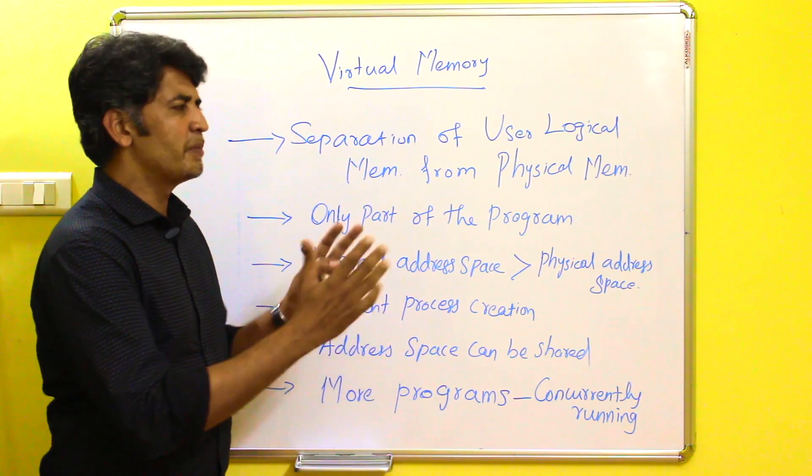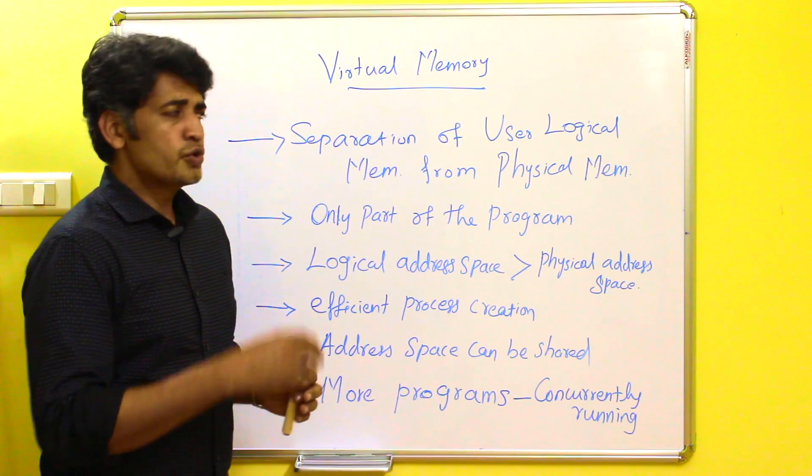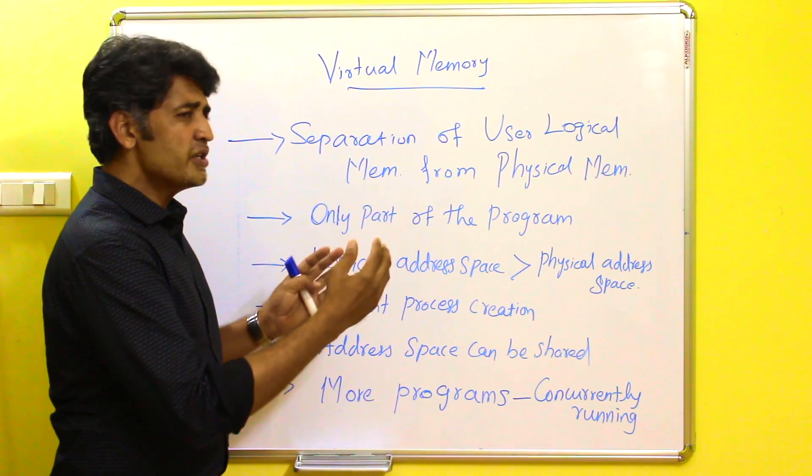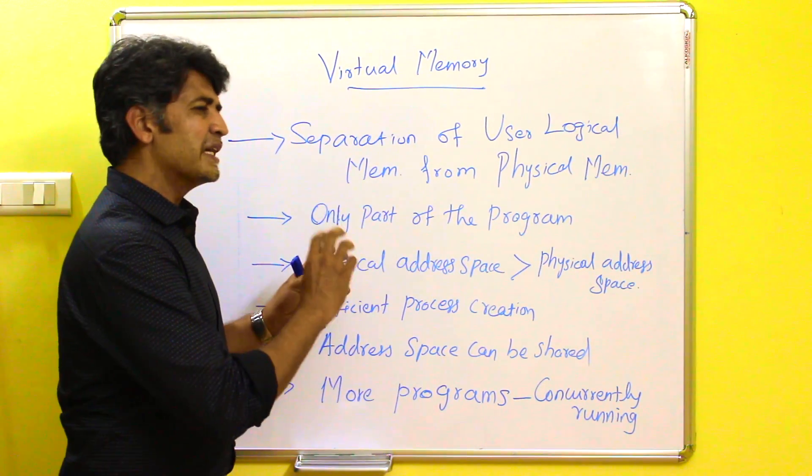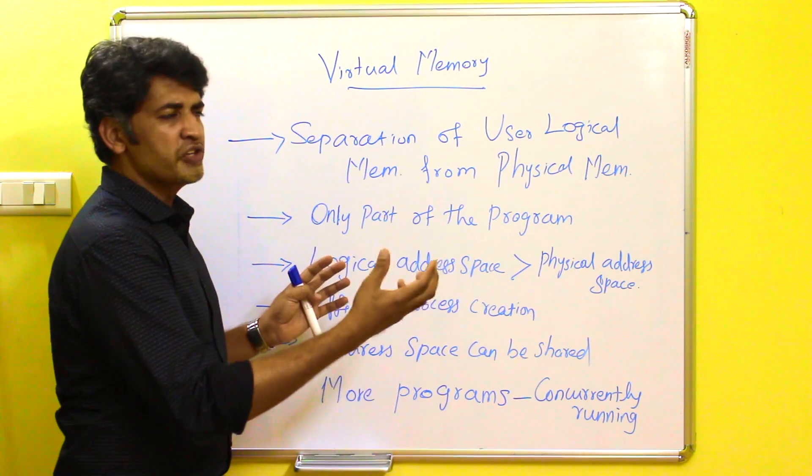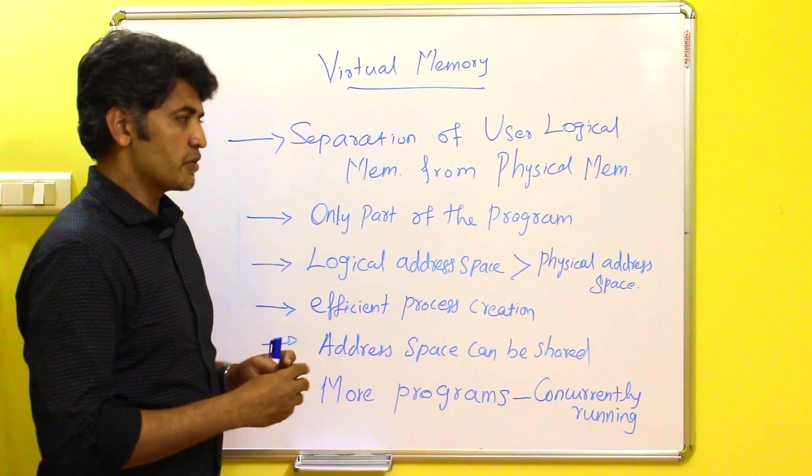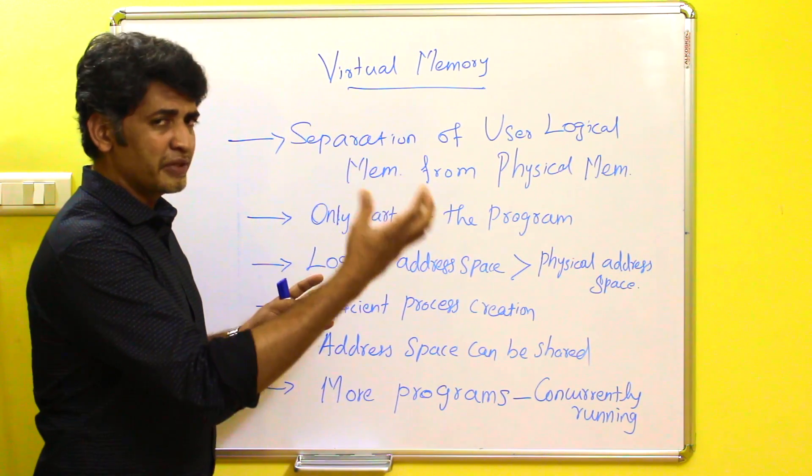The remaining part will be there in the temporary disk in the secondary memory. Whenever the data is required, the pages that are there in the physical memory will be replaced by the newer page required for the process from the disk temporary disk. This is how the swapping will be done between the temporary disk and the physical memory.